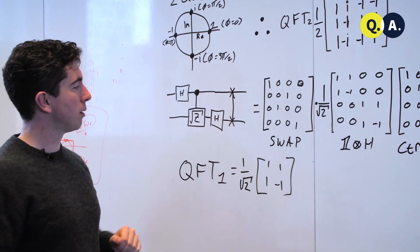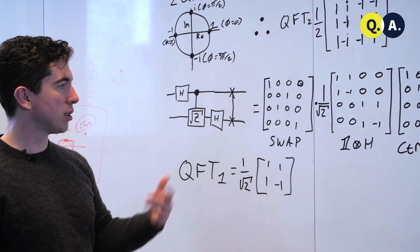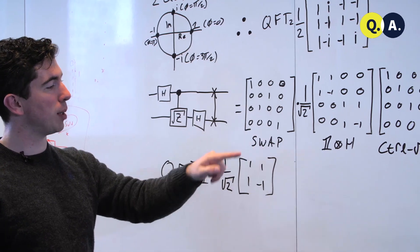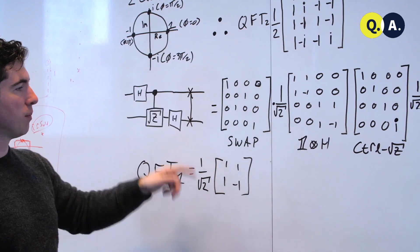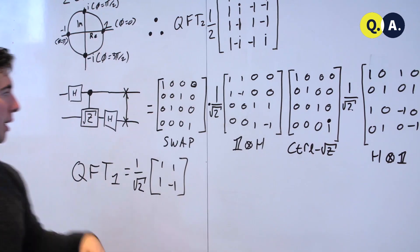Now we can calculate the results of performing these four gates in order simply by putting the matrices in the reverse of the order that they appear in the circuit. So we have swap, identity tensor Hadamard, the controlled square root of Z, and Hadamard tensor identity.